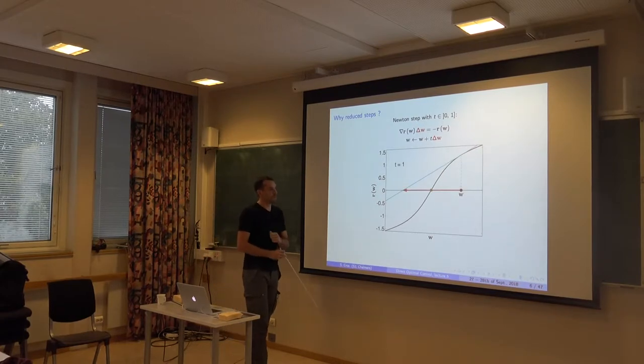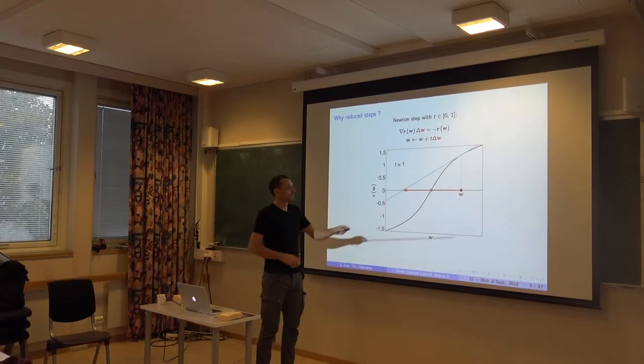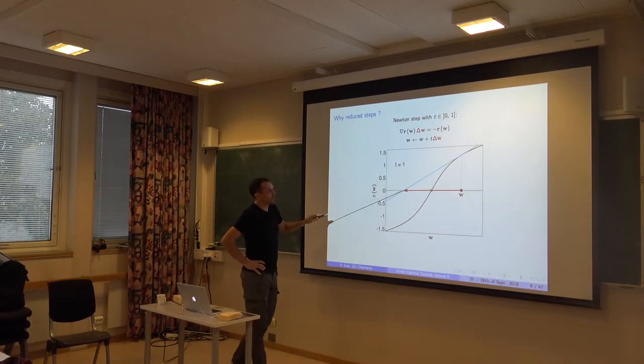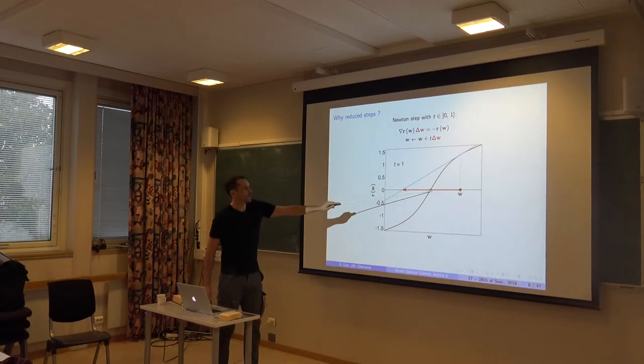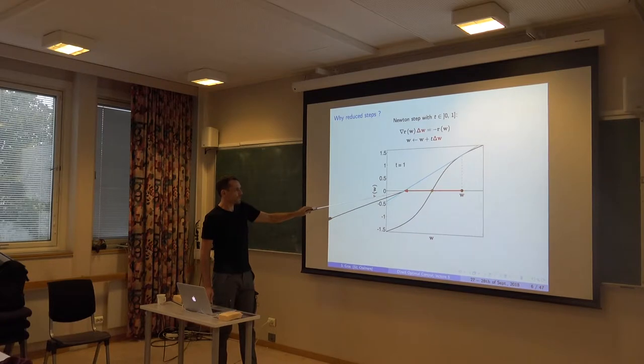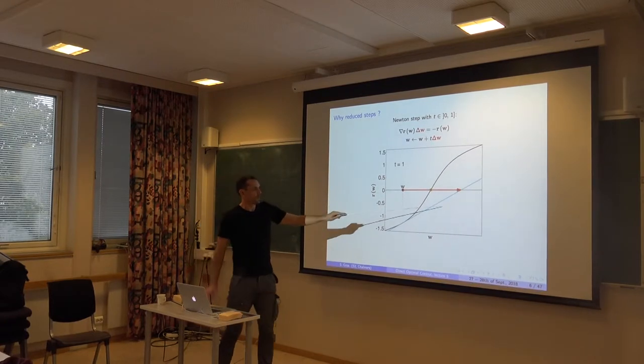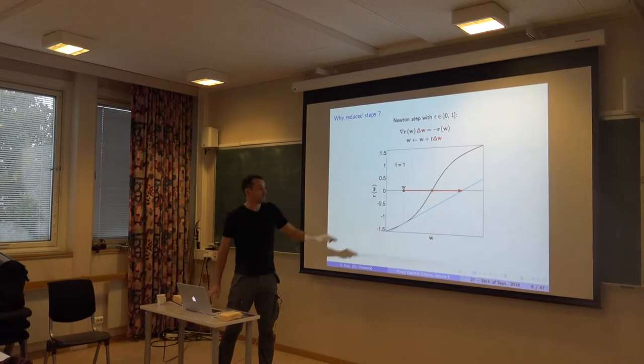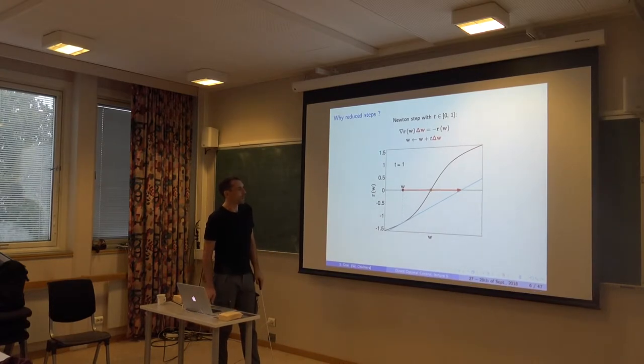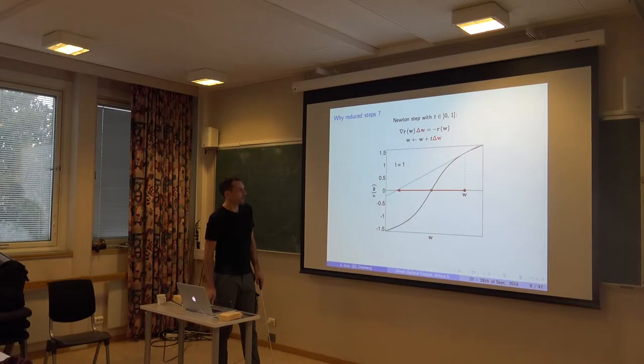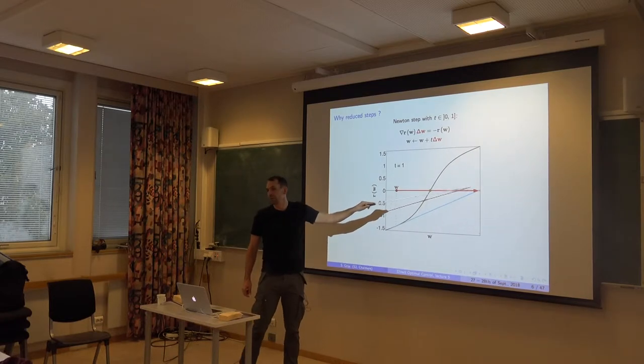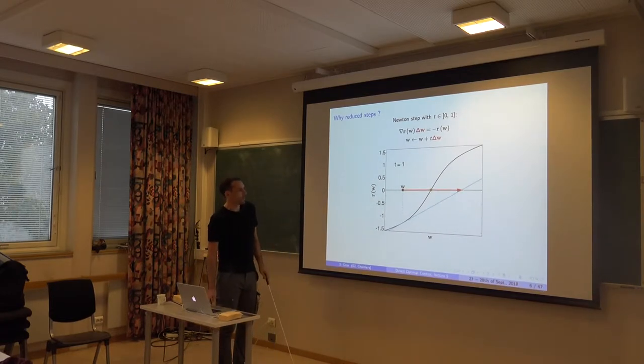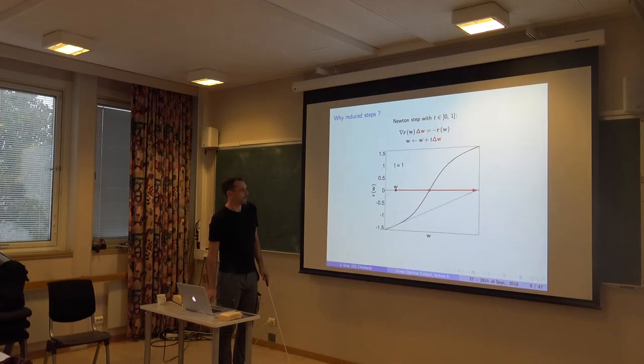Why do we want to use reduced steps? It's trivial to build an example where you would need to do that. Here it is. I would step with full steps, so select my T at 1. I start here. Build a linear model. And it tells me that I should jump over here. So actually, you're jumping over the solution all the way to here. At this point, you do it again. Linear model. And the linear model brings me back here, actually. Kind of where I started, almost. And I keep going. Actually, if you pay attention, you see that you're actually diverging. You're not getting anywhere closer to the solution. You're actually going, like kind of oscillating around, going further and further, right?